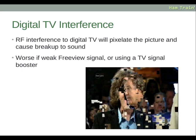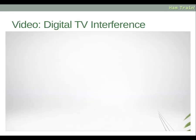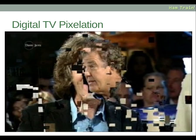For digital TV interference, RF interference to digital TVs will pixelate the picture and cause breakup to sound. It's worse if it's a weak Freeview signal or if the TV is using a signal booster. This image here is typical of what you would see — pixelation and broken-up sound.